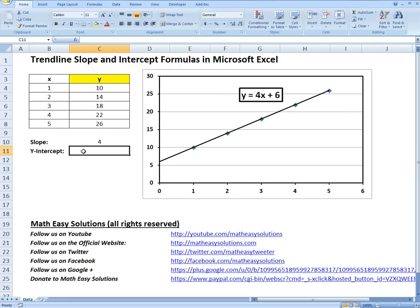So the y-intercept, all you do is just write equals intercept. So that was pretty straightforward. Again, you put the known y's, and then the known x's, and it will give you the exact same value. It's going to be 6 right here.